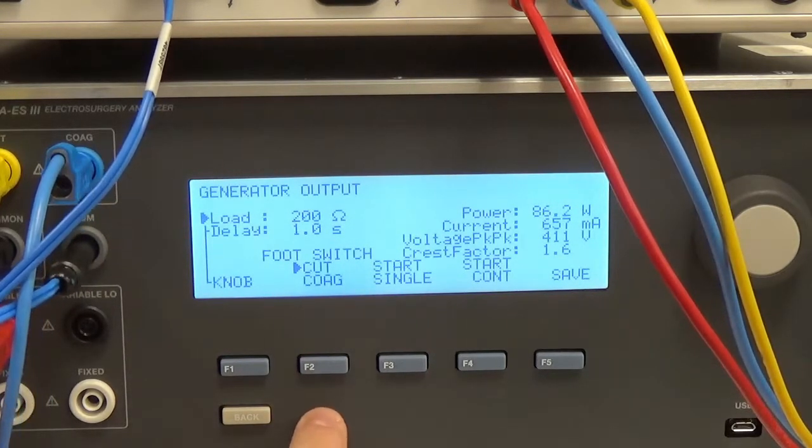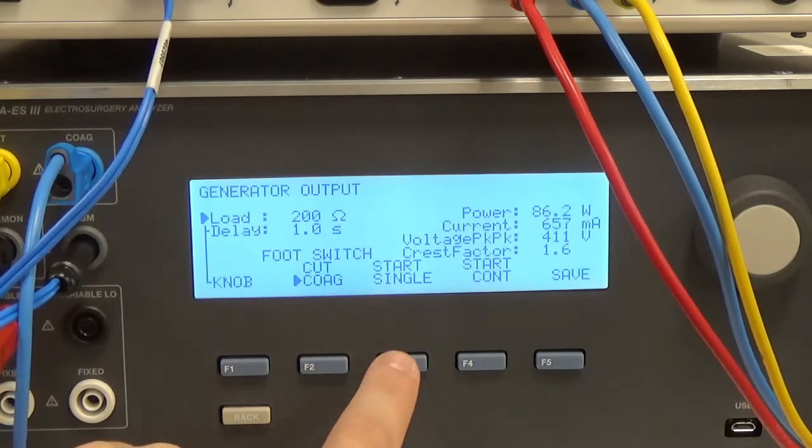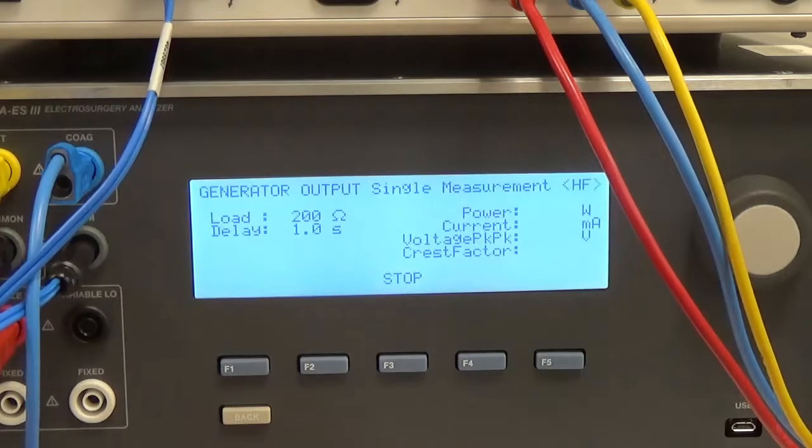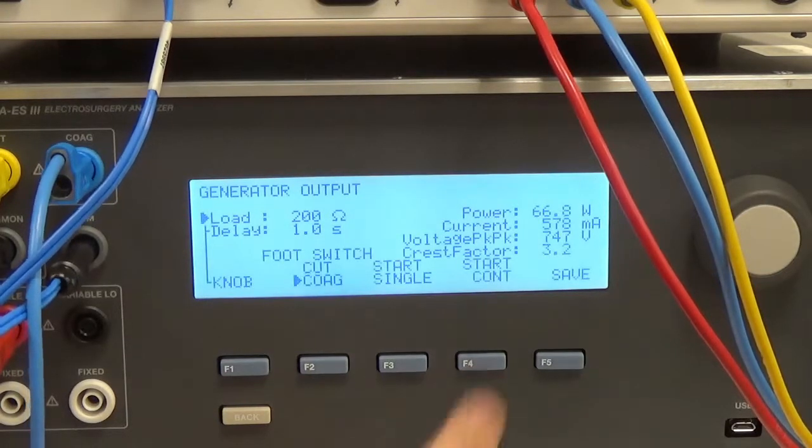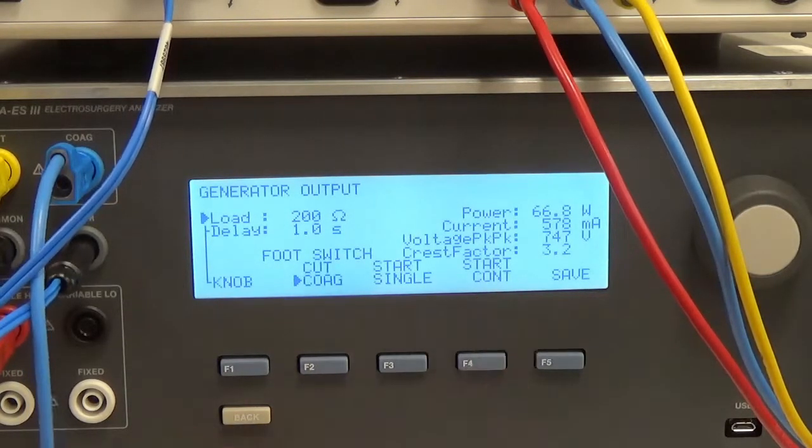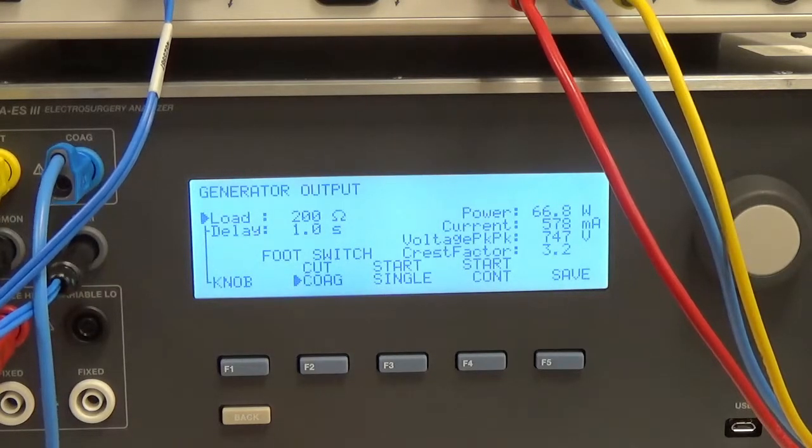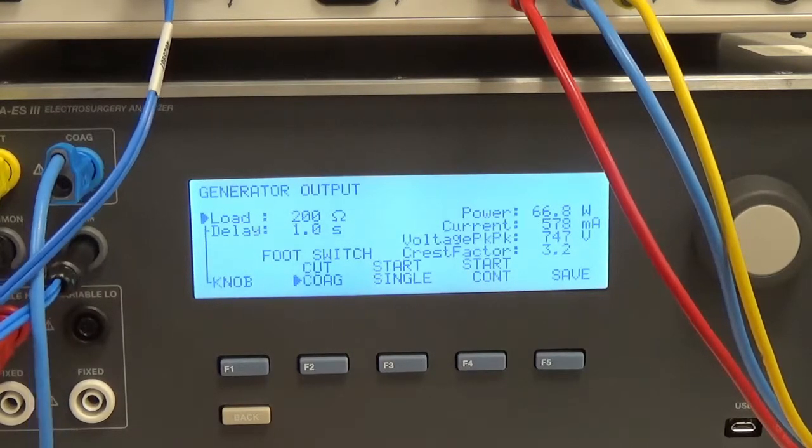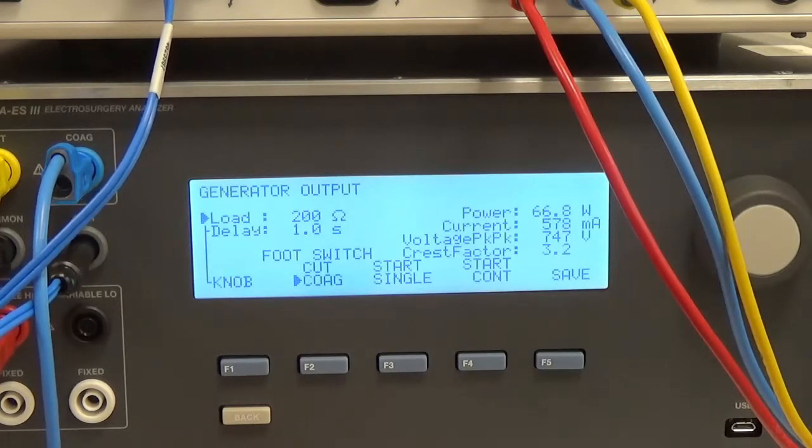If I wanted to measure the coag side, just select coag here. I can start single again. My coag was set to 80 on the ESU and you can see I have the wattage of 66.8 for power. Our current is at 578, peak-to-peak voltage at 747, and a crest factor of 3.2.